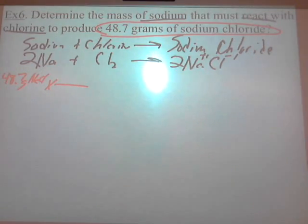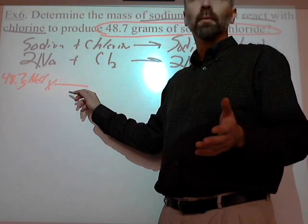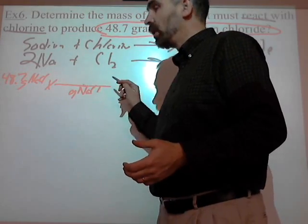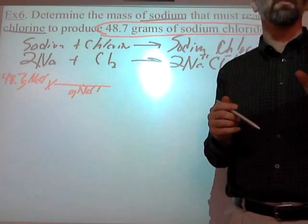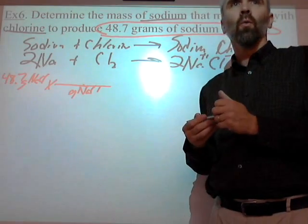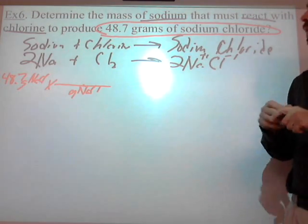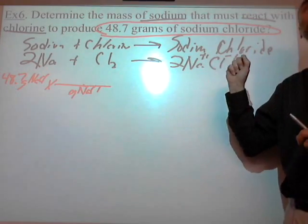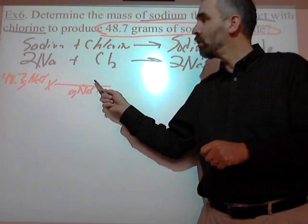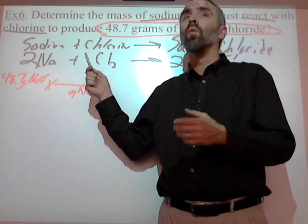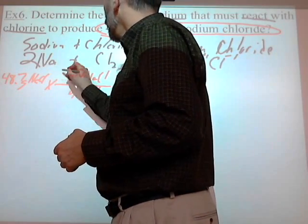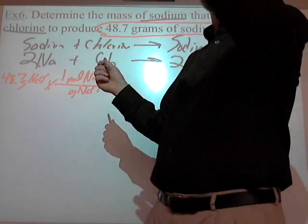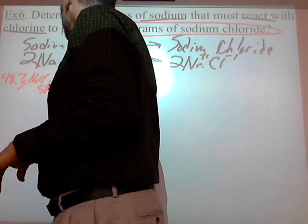Now I may be confused at this point. No one will get the next part wrong — what's obviously on the bottom? Grams of NaCl, because it has to cancel. But you know what they'll get wrong? They'll look back and say, what's it asking for? Mass of sodium — and they'll just put grams of sodium right on top. You cannot do that. What is stoichiometry? Moles to moles. These coefficients are not a mass ratio — they are a mole ratio. I've got to use moles. Am I in moles yet? No, I only have grams. So my first step has to be: convert grams of NaCl to moles of NaCl. One mole contains how many grams of NaCl? Add up Na and Cl and you get 58.443.